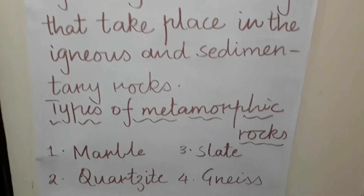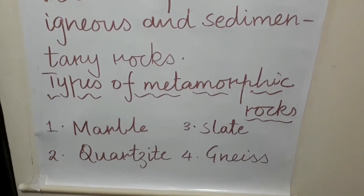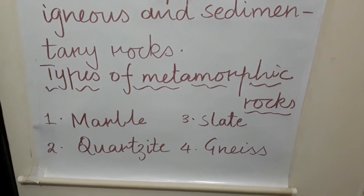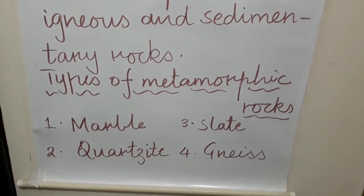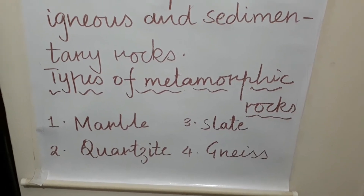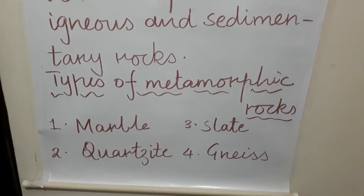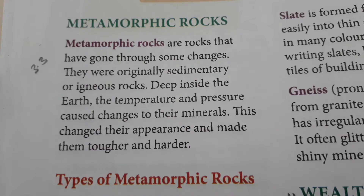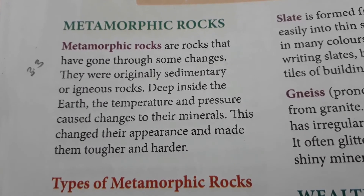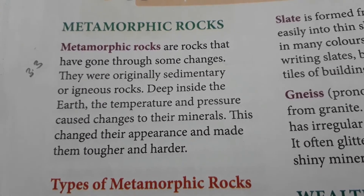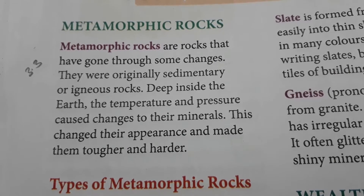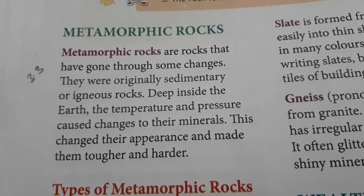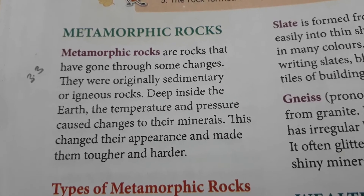There are four types of metamorphic rocks: first is marble, second is quartzite, third is slate, and fourth is gneiss. Before starting the reading, you should know the meaning of metamorphism — metamorphism means complete change in physical appearance.